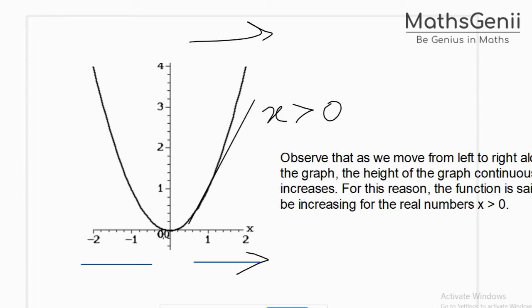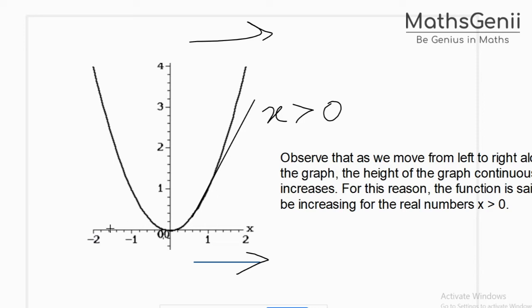Now observe the other part. From left to right, minus 1 is greater than minus 2, so the x value increases from left to right. But as you go from left to right, the graph dips down — the height continuously decreases. Hence the function is called a decreasing function for all values x less than 0.